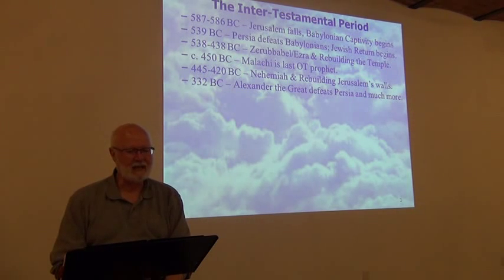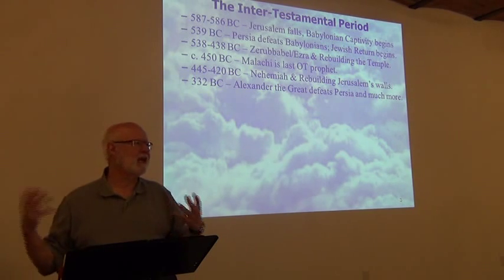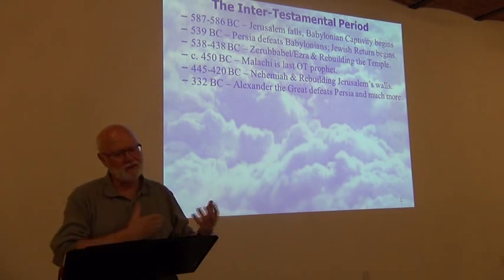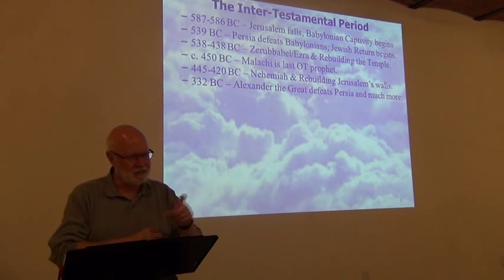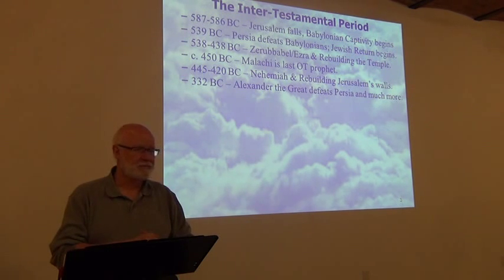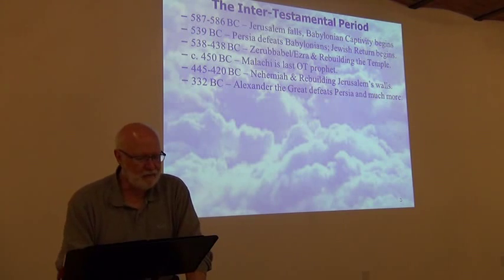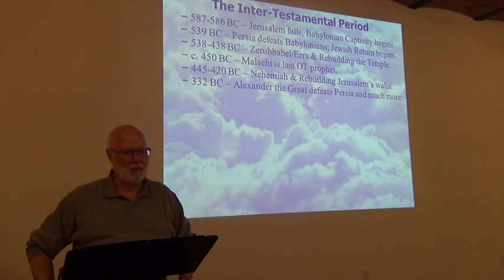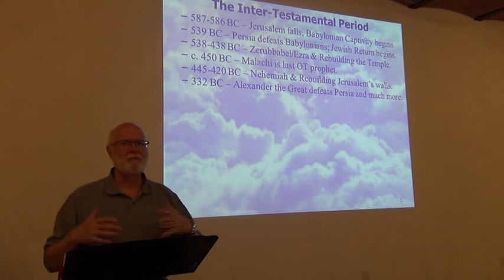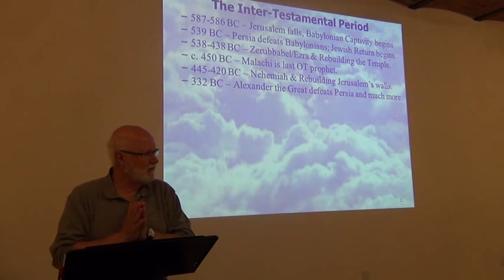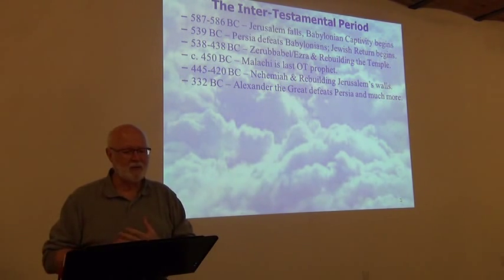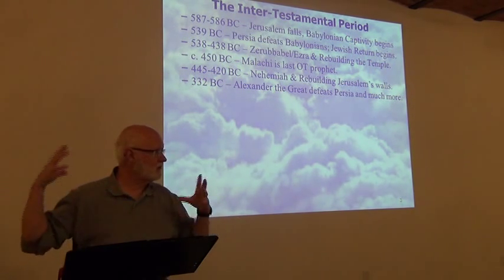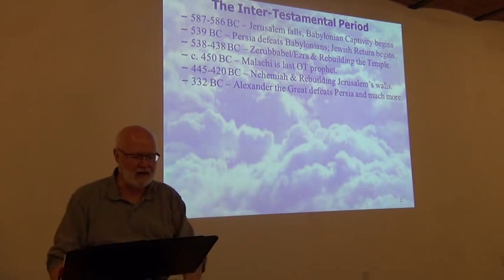In 538 to 438 BC, that 100-year period, we get Zerubbabel and Ezra first coming back to rebuild the temple. Then around 450 BC is Malachi, who is the last Old Testament prophet — the last one dated. Then from 445 to 420, the problem was that even though they were rebuilding the temple, they didn't have a wall around the city, and people kept coming in and stealing — it was insecure, they were being attacked. The book of Nehemiah is all about rebuilding the walls of Jerusalem. By 420 we have the wall rebuilt, the temple rebuilt, people resettled there.